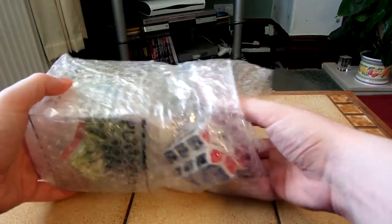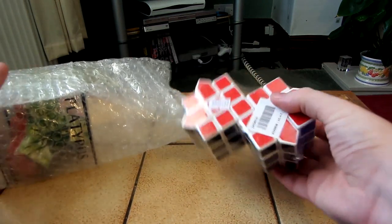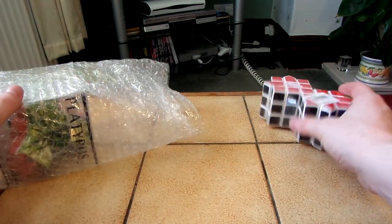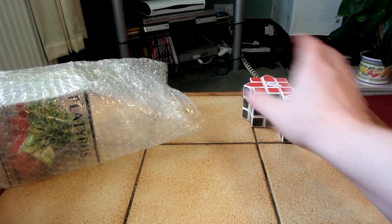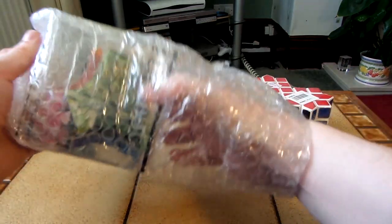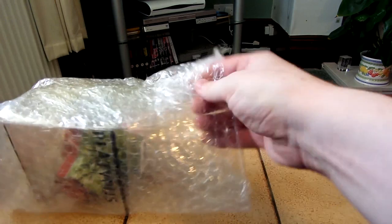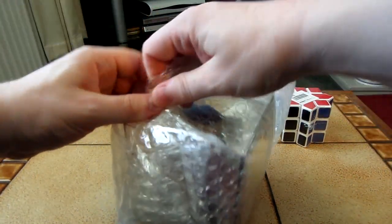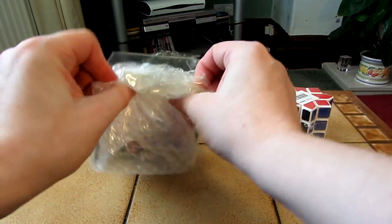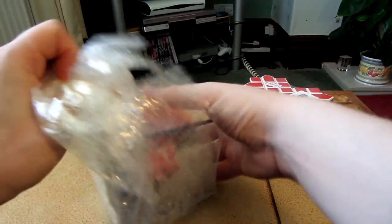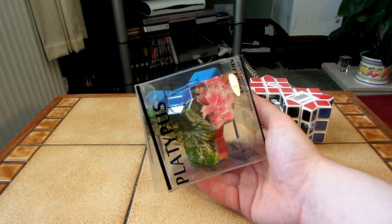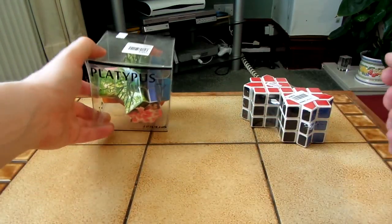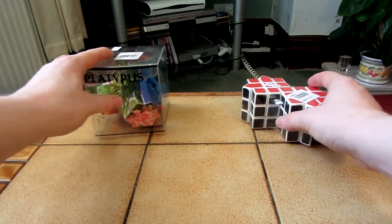So we have a Siamese 3x3 shape mod. These are fell, I knew these. And if I can get it out, a platypus which looks way smaller than how it looks in the picture. So let's take a look at this first.